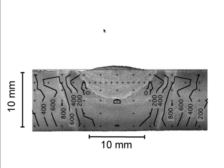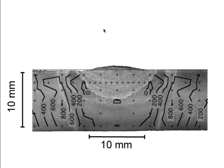Now we move to neutron diffraction, and there are only a couple of things you need to know. First, neutrons can penetrate huge samples — this material is 10 millimeters thick, but you can easily go through several centimeters of steel and get diffraction information as a function of position inside your material.